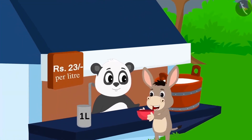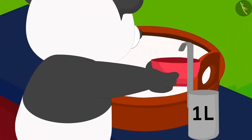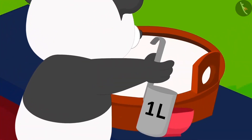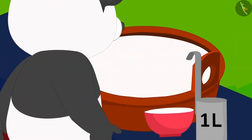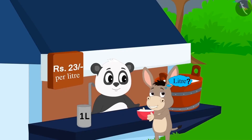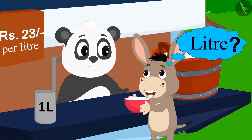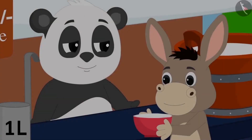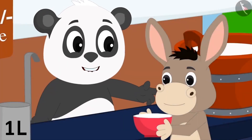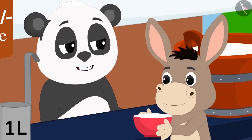Today, Bholla has come to buy milk from Golu's shop. Golu measured one litre of milk with his measuring jug and gave it to him. Bholla knows nothing about litre. He asked Golu, why are you using this new jug and what is this litre?